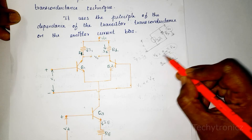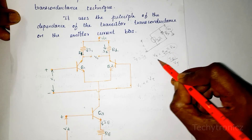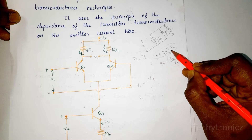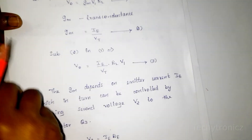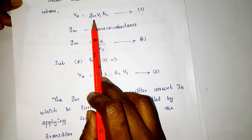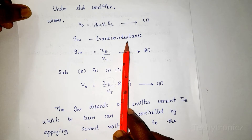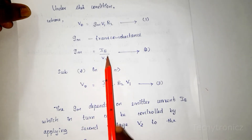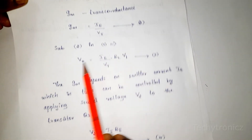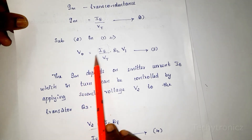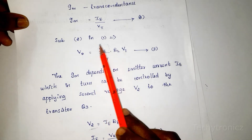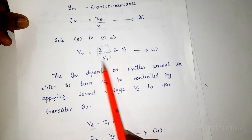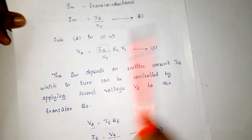Now applying the transconductance value to the output voltage: V0 equals IE times V1 times RL divided by Vt. Since gm equals IE divided by Vt, substituting this gives V0 equals (IE / Vt) times RL times V1. The gm value depends on the emitter current IE.